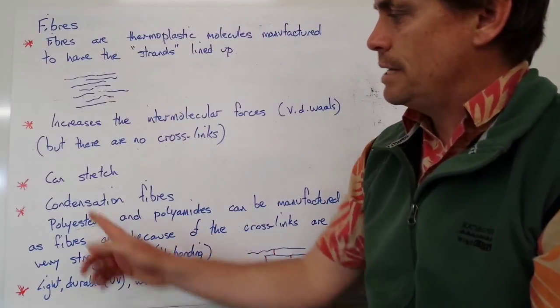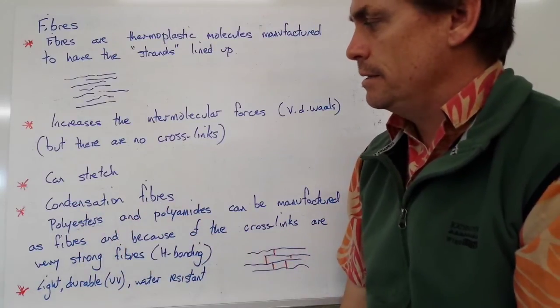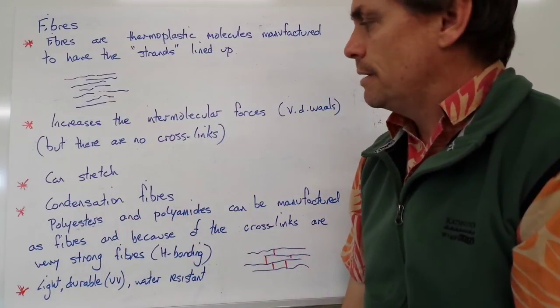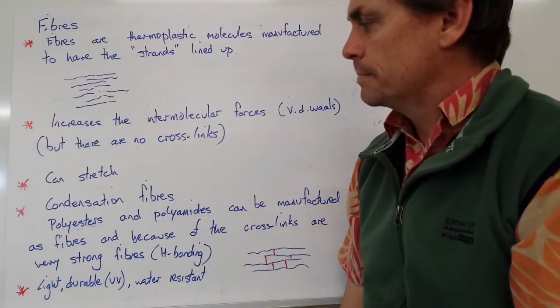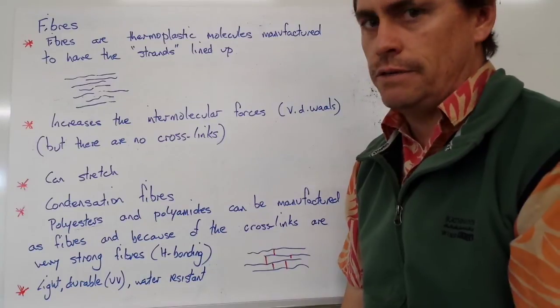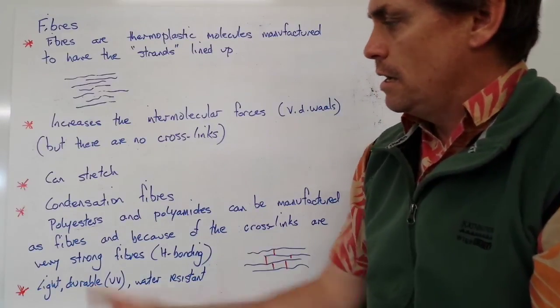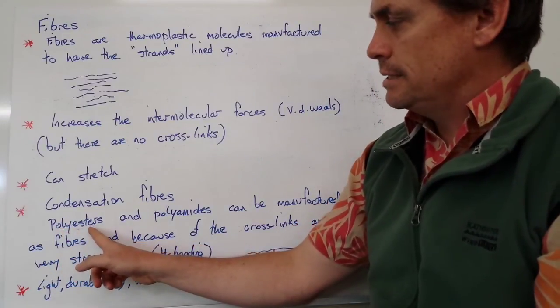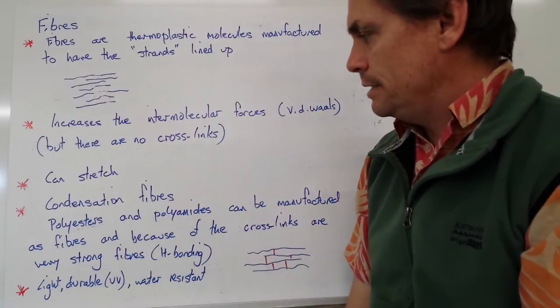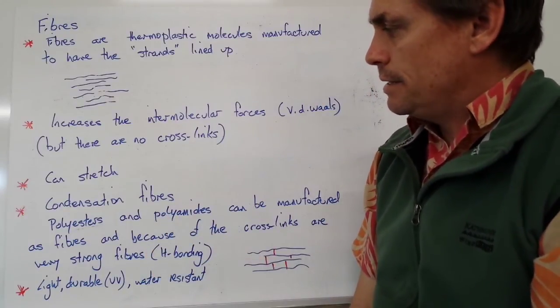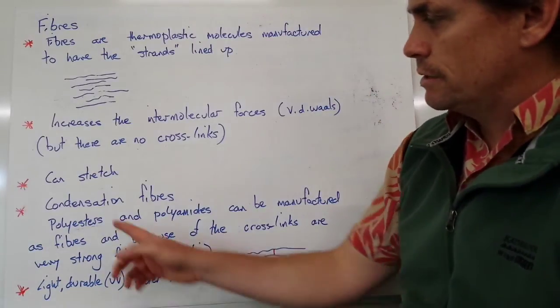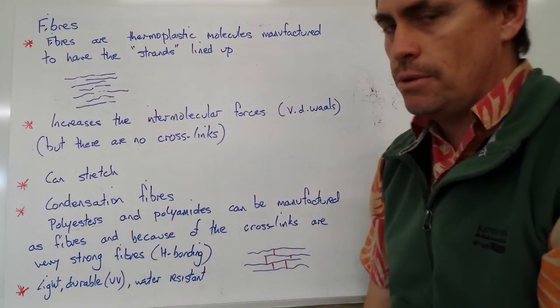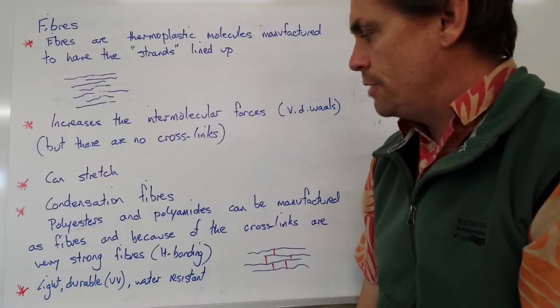If we contrast this with a condensation fibre, in other words, a fibre that's been made out of a condensation process that gives out a little bit of water, we can use polyesters or polyamides. We can form a much stronger fibre. In this case, with our polyester or polyamide, because we can form hydrogen bonds, we'll have a higher melting point and higher tensile strength.